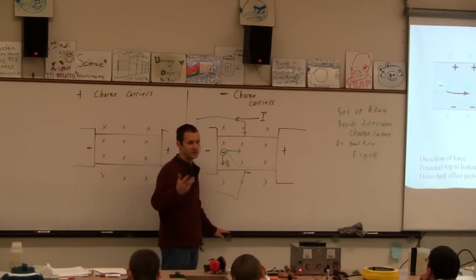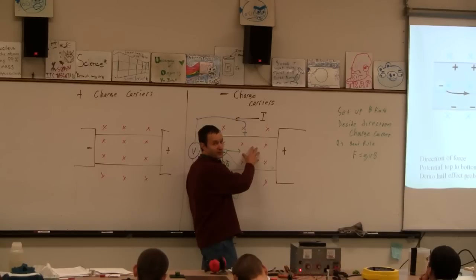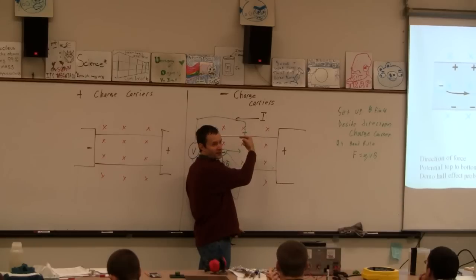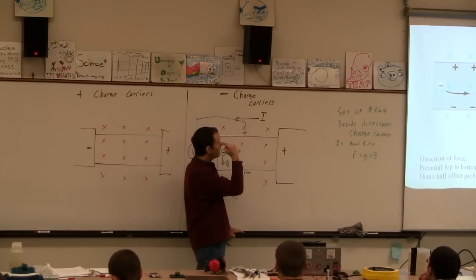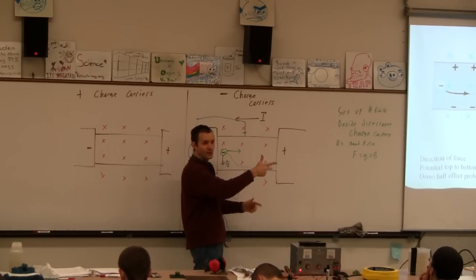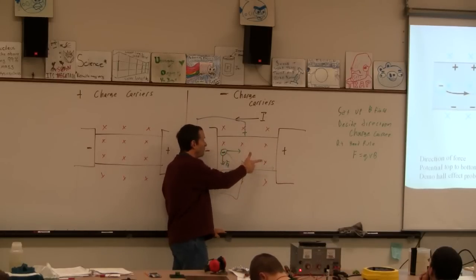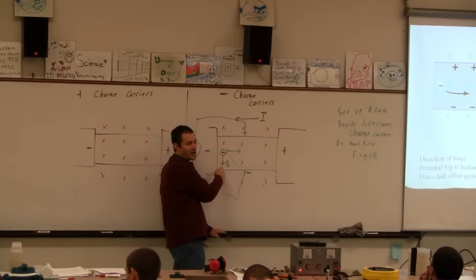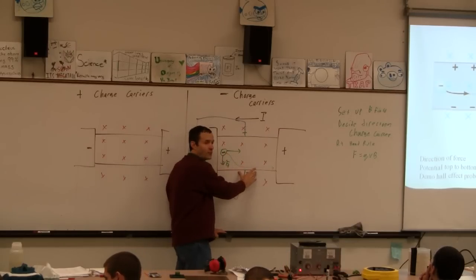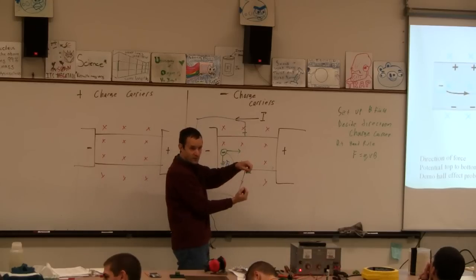You need to reason through this on a test — this is like a word question. So: first, it's a flat conductor in a magnetic field into the page. Second, if the current flows to the left, electrons have to flow to the right. Third, do the right-hand rule — electron goes that way, magnetic field into the page, force is up but it's negative so the force is down. That makes the bottom of the wire negative relative to the top.